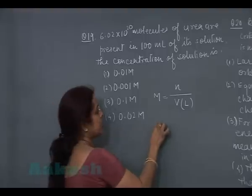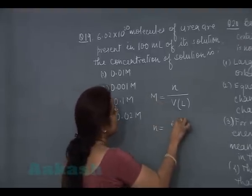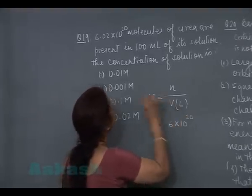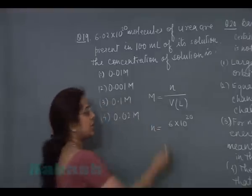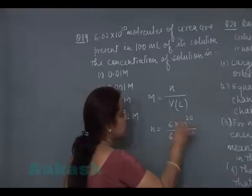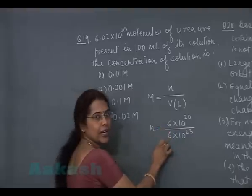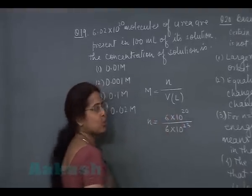Now in this question, number of molecules of urea is given as 6 × 10^20 molecules. One mole, that is 6 × 10^23 molecules. So in this way, we can calculate the number of moles of urea.